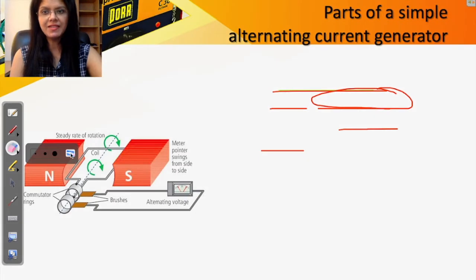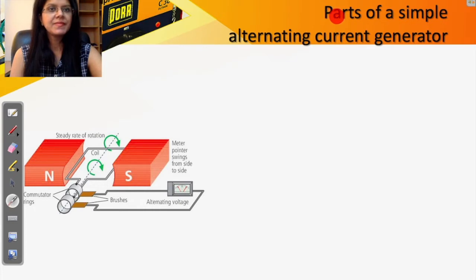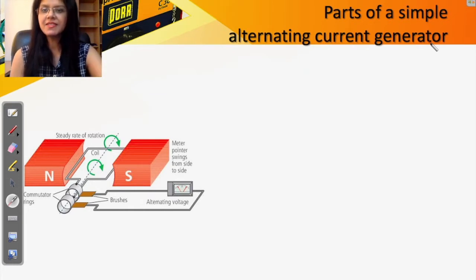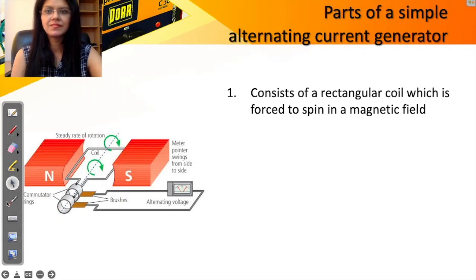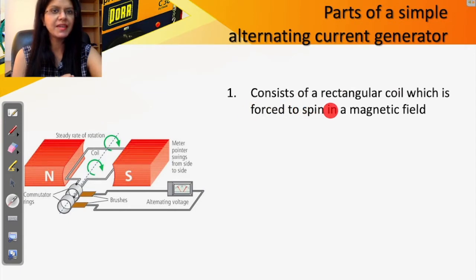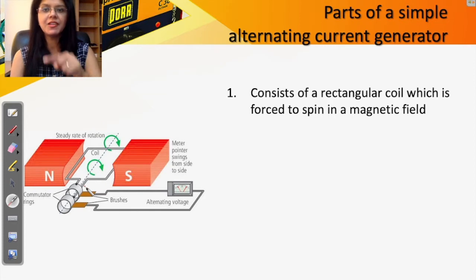Let us understand the parts of a simple alternating current generator. The full name of AC generator is alternating current generator — we'll understand what alternating current means as we proceed. The picture here shows our AC generator. It consists of a rectangular coil which spins inside a magnetic field. You can spot the rectangular coil here — it is forced to spin.